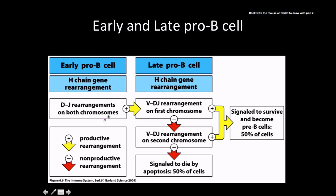This diagram from the book is helpful because it shows the processes. We have an early pro-B cell—it just went from being a stem cell—and the first thing we do is the most difficult: D-J rearrangements on both chromosomes. If this is successful on both chromosomes, it progresses to a late pro-B cell. If unsuccessful, the cells are killed by apoptosis.